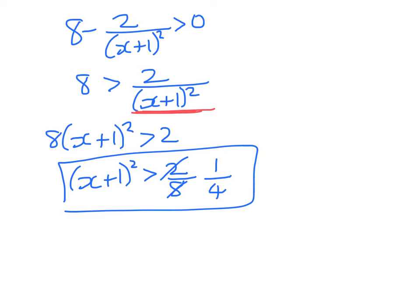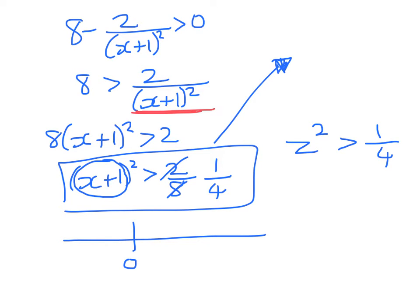Now we could go through and expand that out, and solve it how we used to solve quadratics in year 12. But more intuitively, let's do a wee number line. Here's 0. So this thing here, we could call this z. z² is greater than 1/4. So when will that be true? Well, it'll be true when z is greater than 1/2, but also when z is less than negative 1/2.